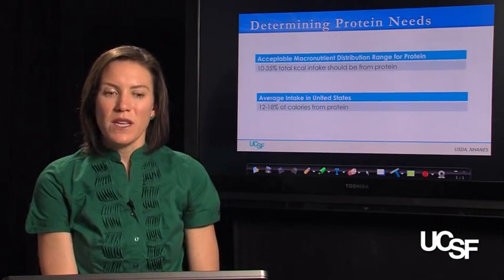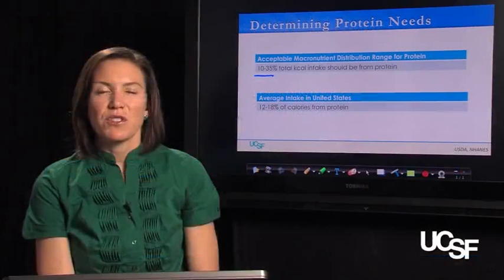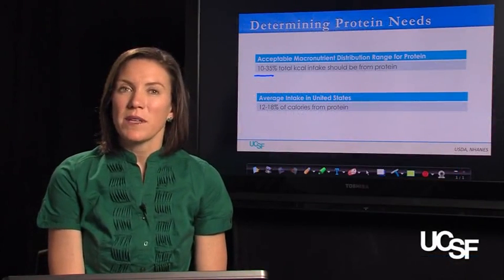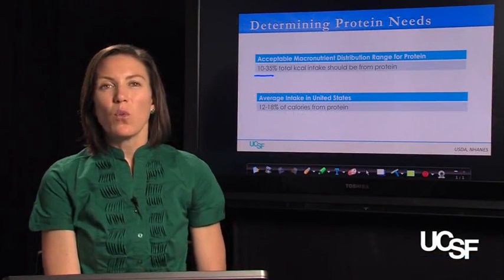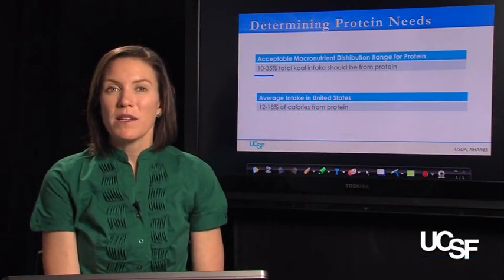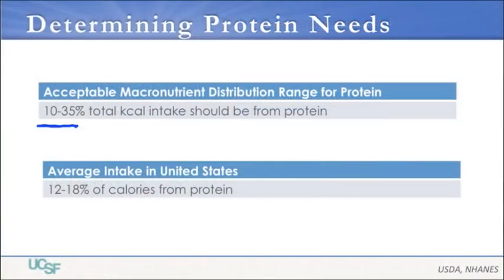How much protein do we need? Ten to 35% of your total calories should come from protein. If you're significantly under 10%, you're probably not getting all the essential amino acids you need. If you're way over 35%, you're probably not getting enough fat or carbohydrate. In the United States, the average person eats somewhere between 12 to 18% of their calories from protein.